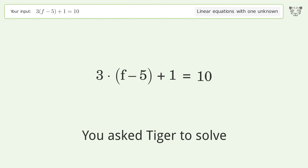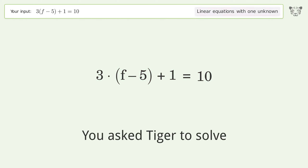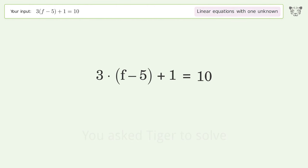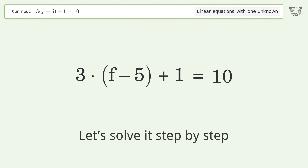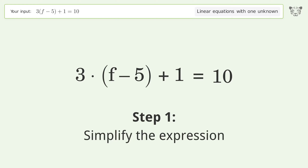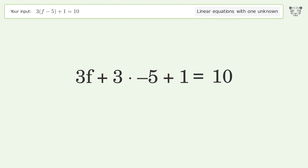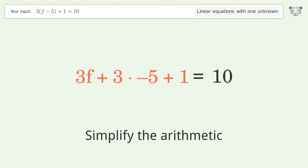Tiger is asked to solve a linear equation with one unknown. The final result is f equals 8. Let's solve it step by step: simplify the expression, expand the parentheses, then simplify the arithmetic.